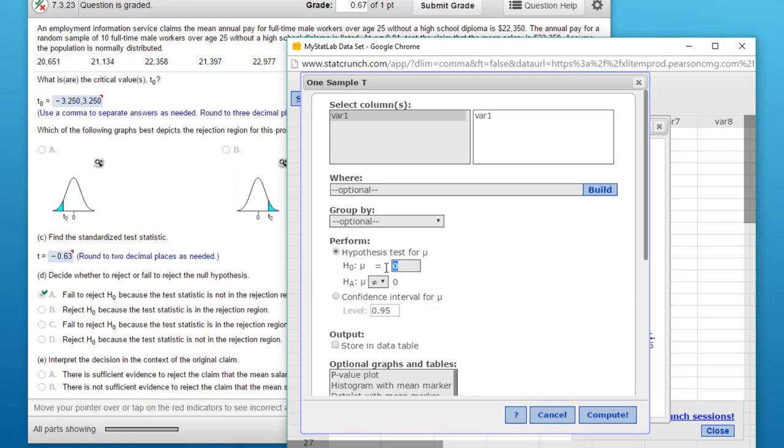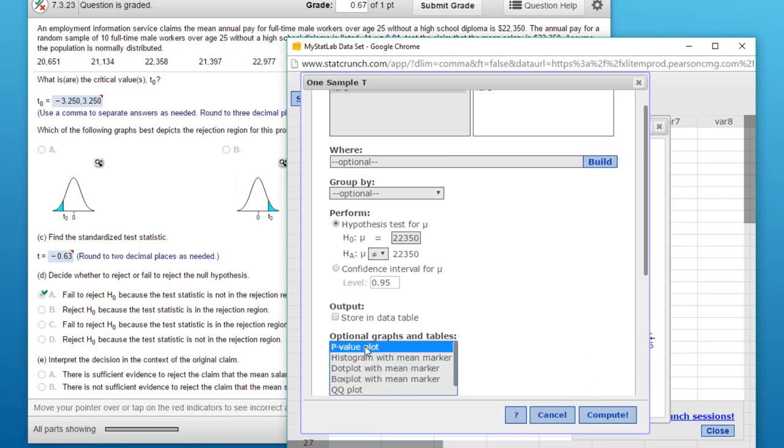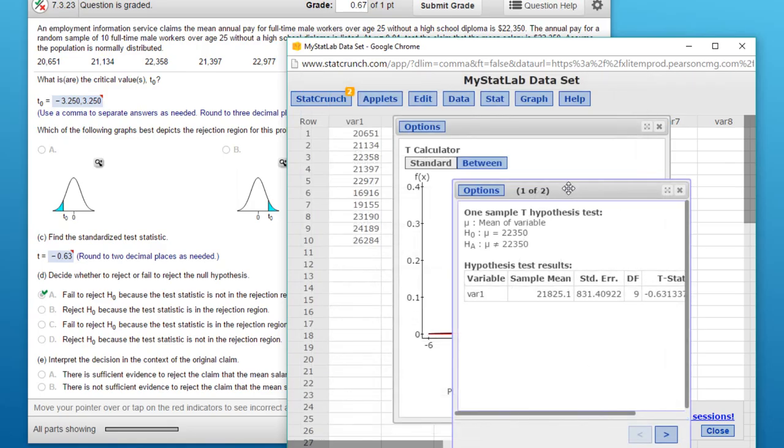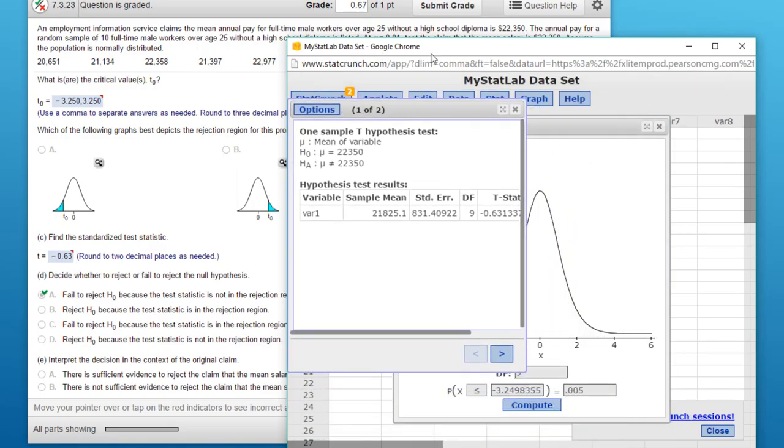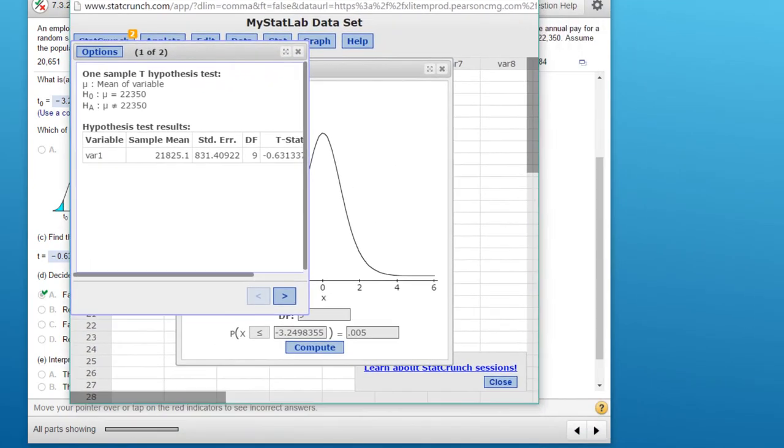Mu is 22,350. We make sure that the alternative is the complement, which is the not equal. And I'm going to click on p-value plot just to give us a little more information here. And click on Compute.